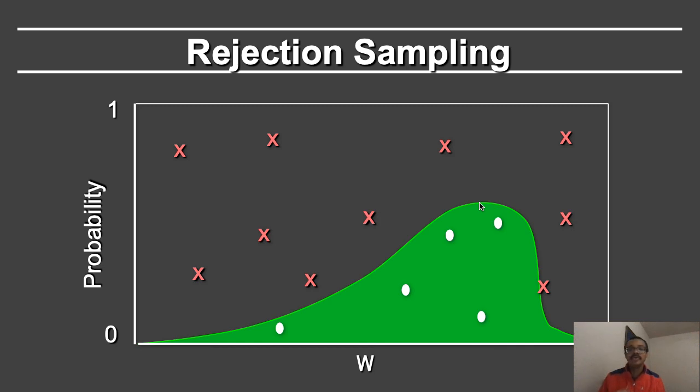Now you distribute samples in 2D across this entire rectangle. But you only accept the samples if they lie within the original probability distribution function. That is the white points here.